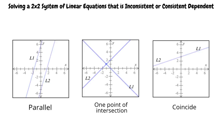What do those three solutions look like? We know that two lines in a plane will lie in one of three positions. They will be parallel, as the example shows in the first graph. They will intersect in one point only, as the example shows in the second graph, or they will coincide, or be the same line, as the example shows in the third graph.